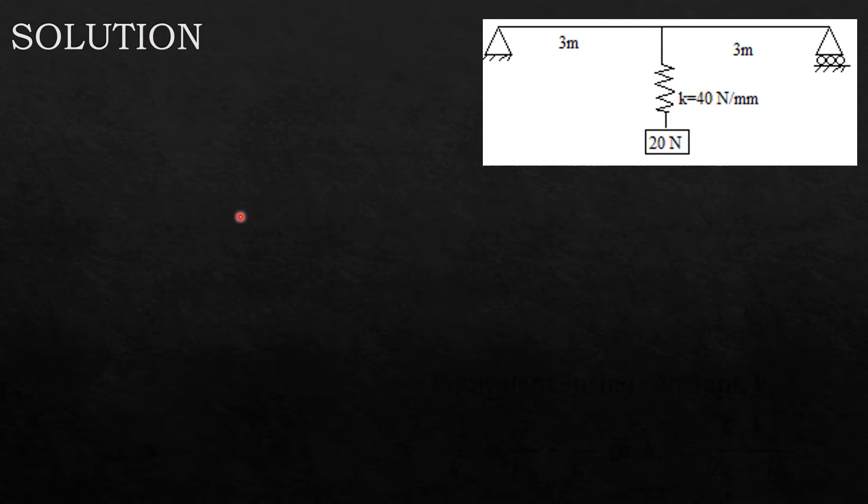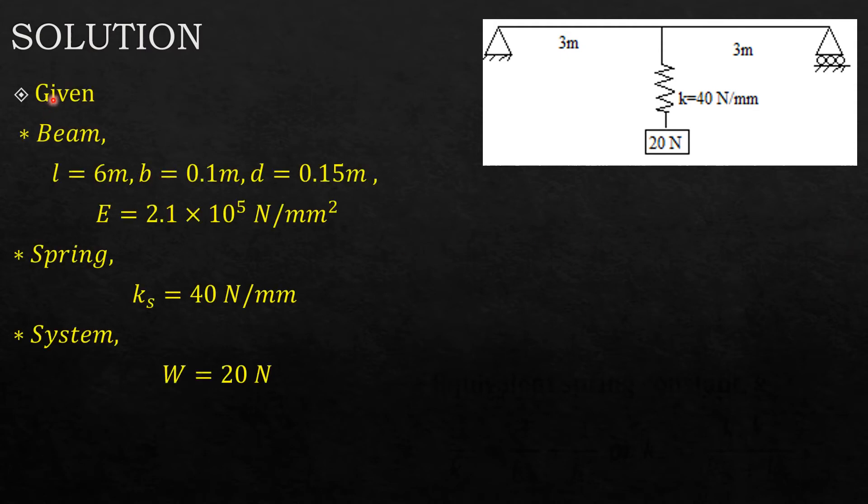Let's see what is it that you are given. For the beam you're given the length is six meters, the breadth is 0.1m, and the depth is 0.15m, and the modulus of elasticity for the beam is as given. For the spring you are given k = 40 N/mm, and for the overall system we know that the weight is 20 Newtons because you are supposed to neglect the mass of the beam.